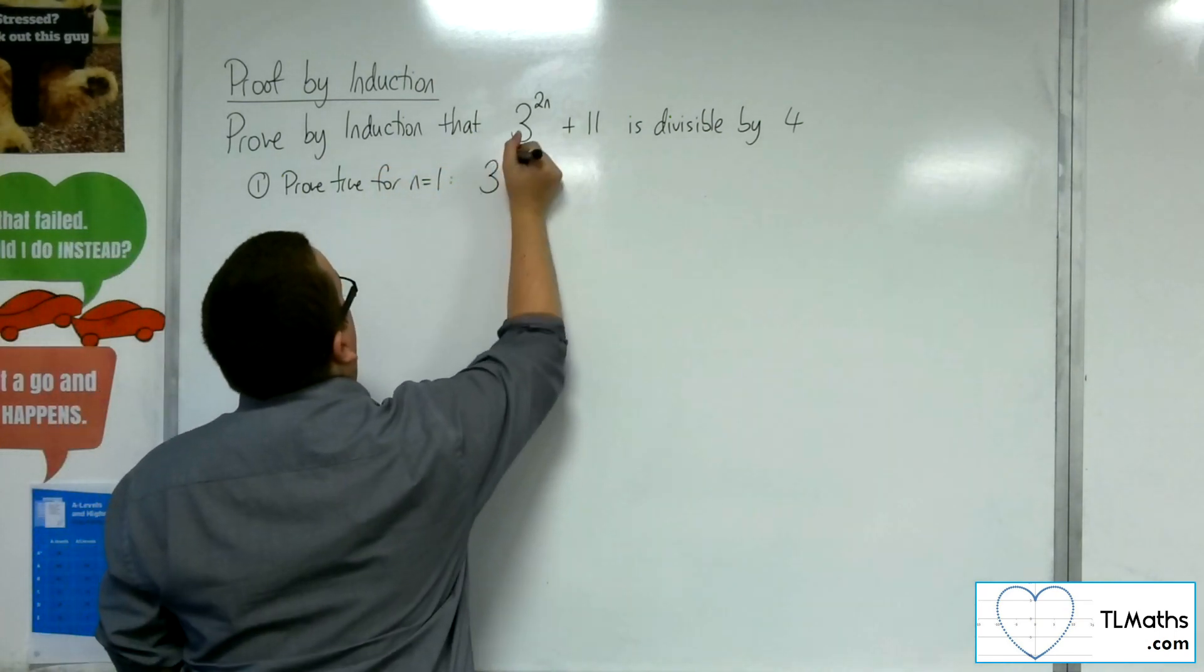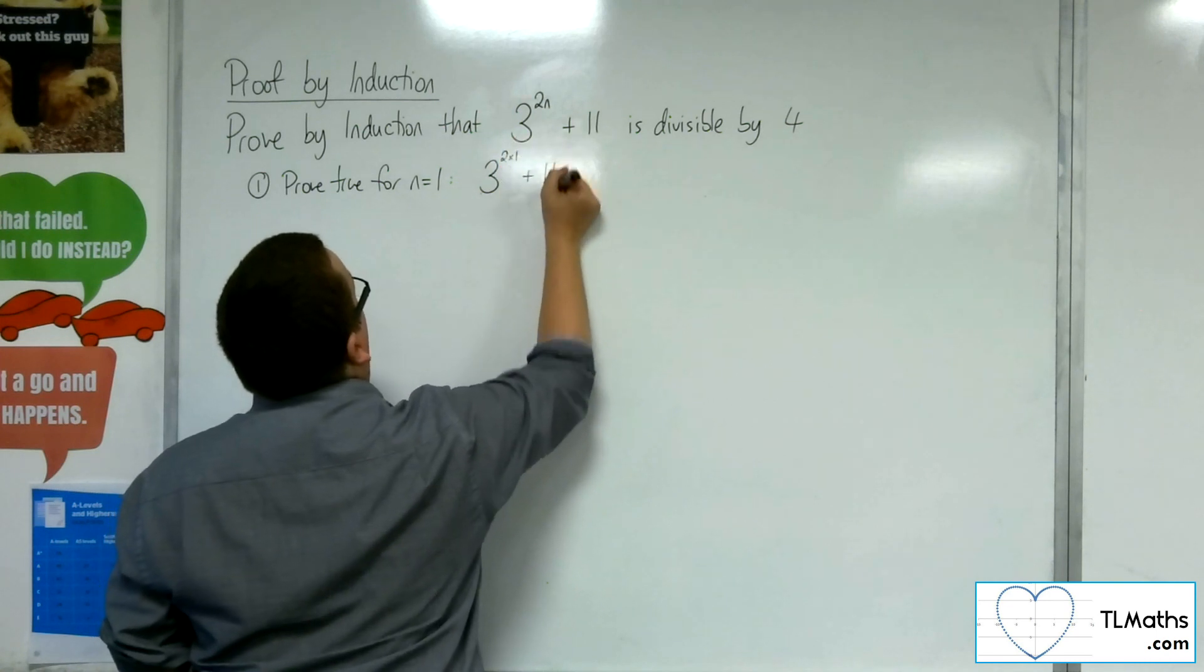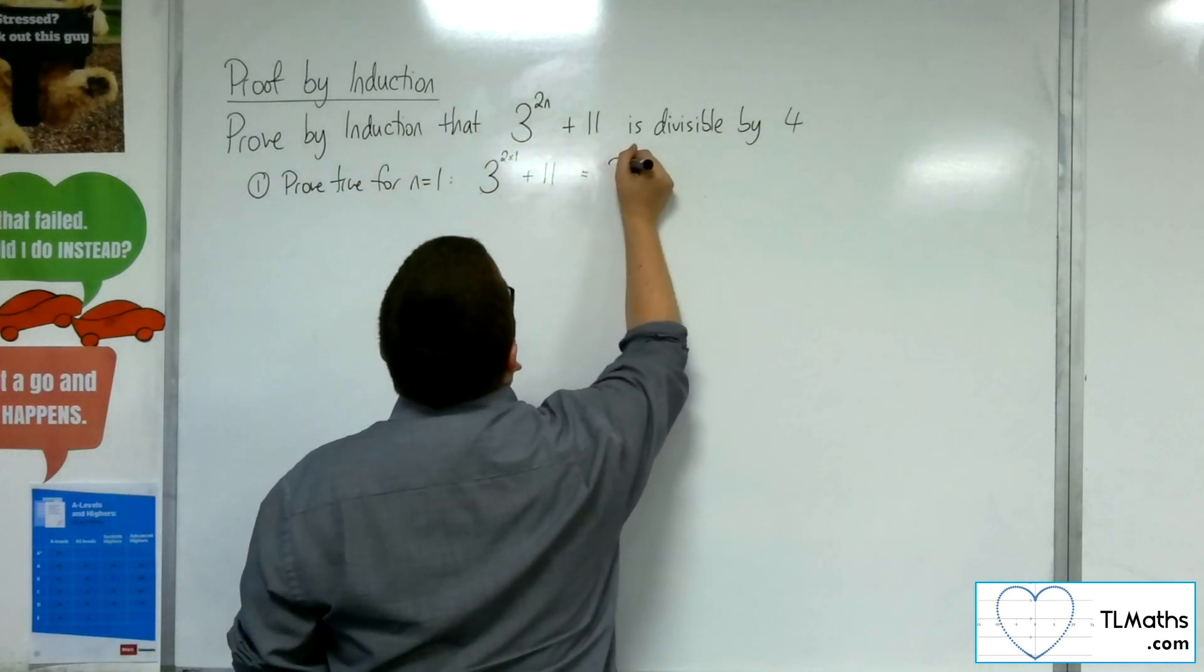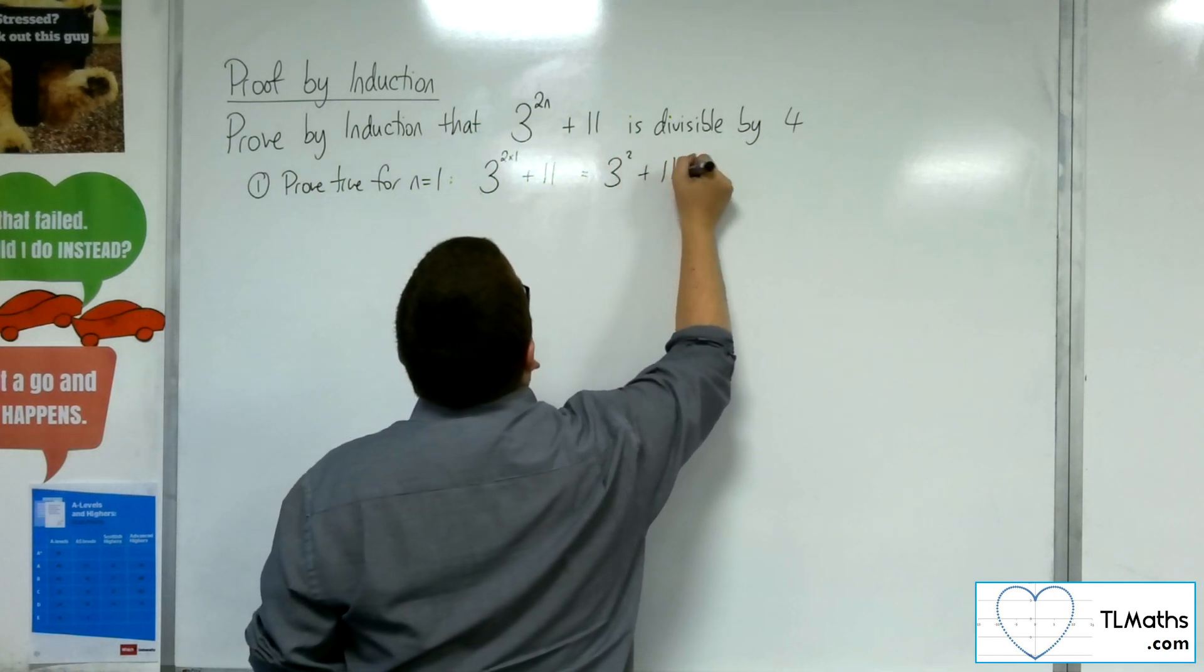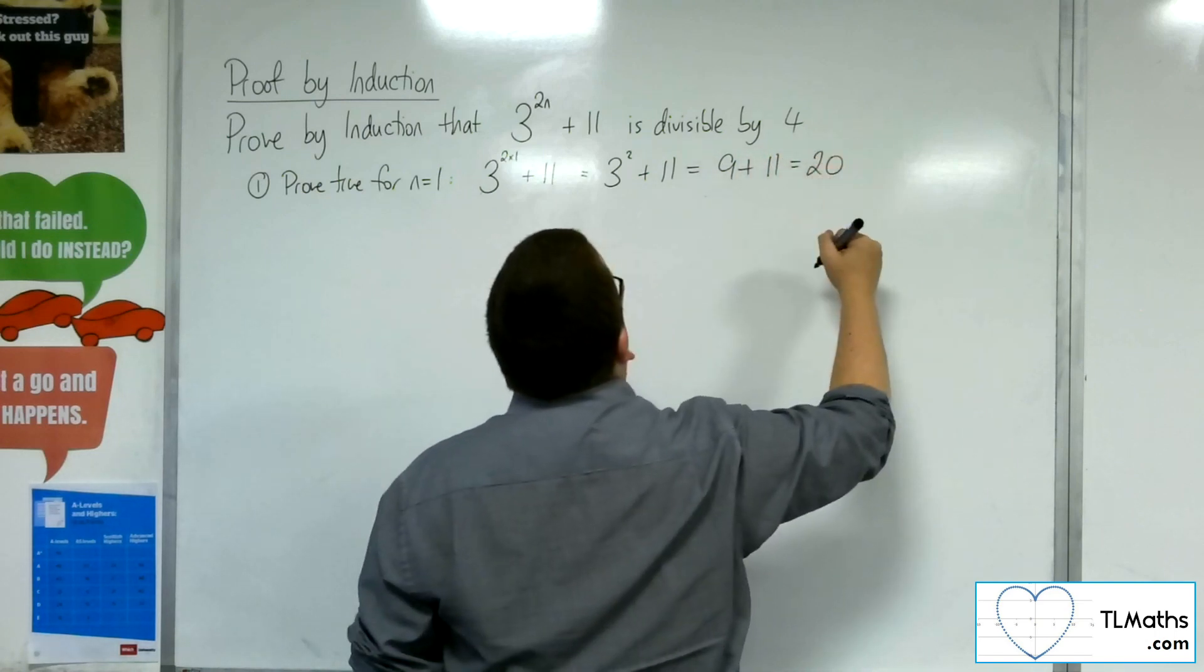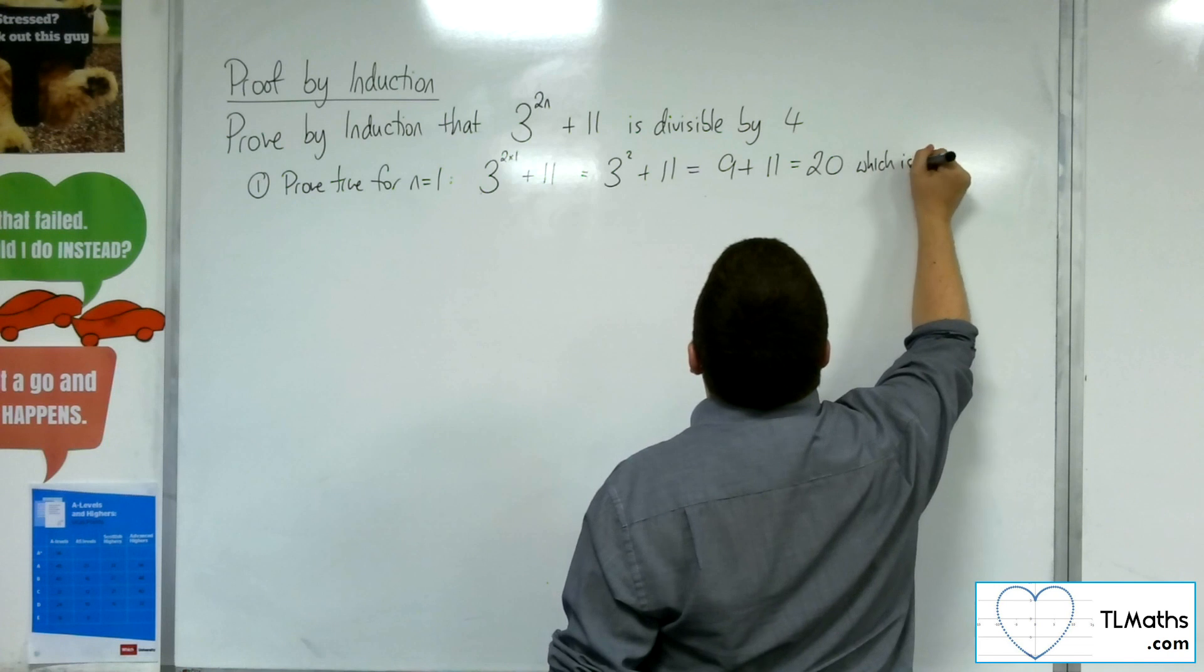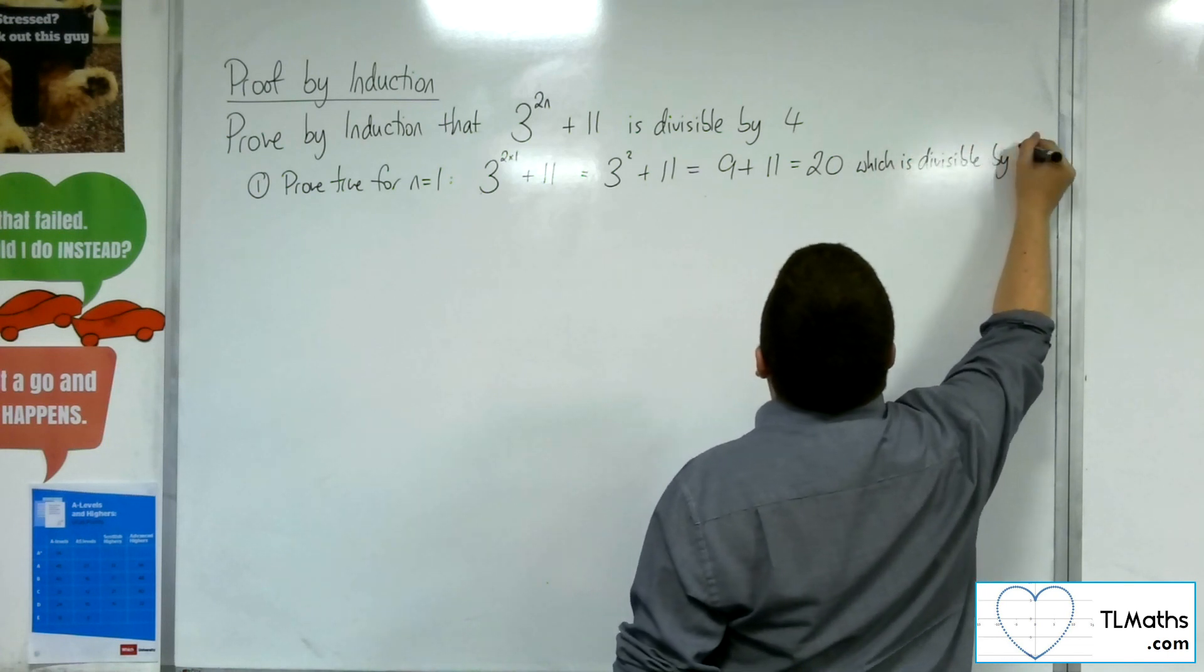So we've got 3 to the power of 2 times 1 plus 11 is equal to 3 squared plus 11, of course, which is 9 plus 11, which is 20,